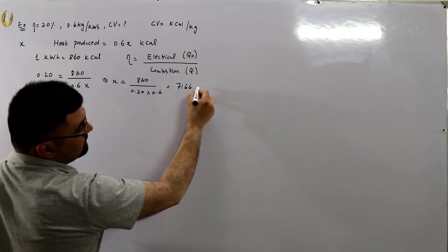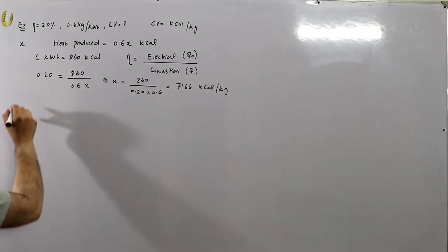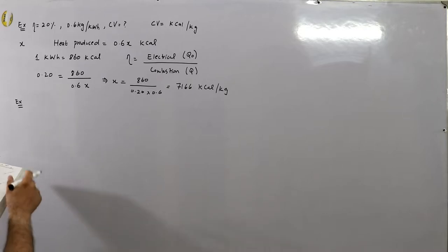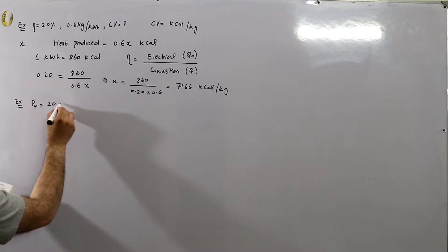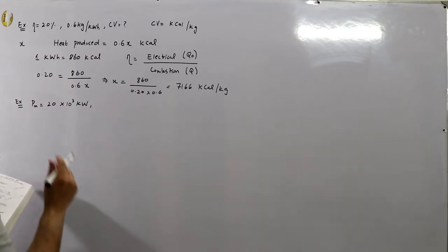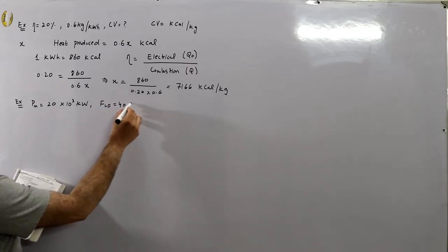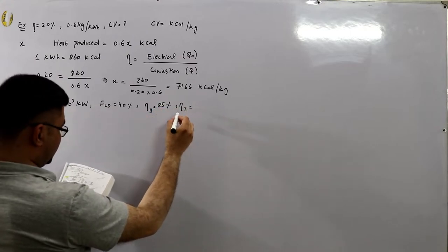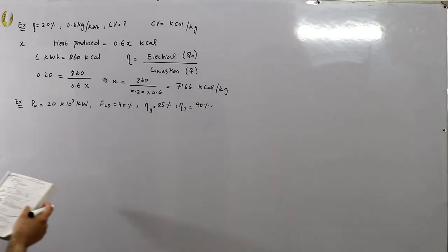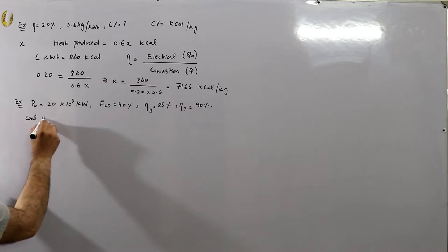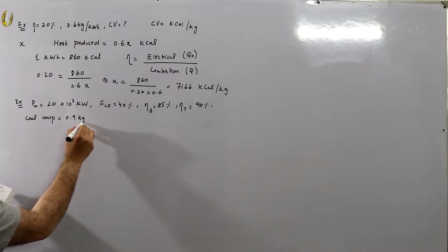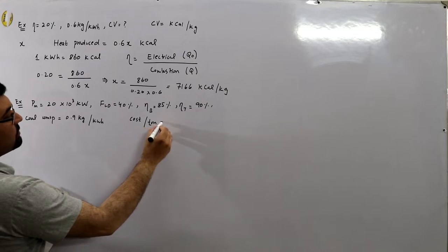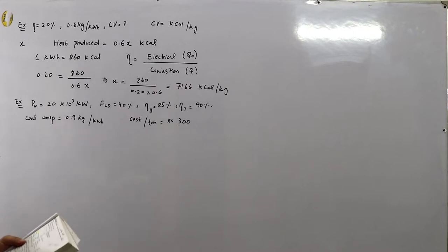Next example: a thermal power station has the following data — maximum demand is 20,000 kilowatts (20 MW), load factor is 40%, boiler efficiency 85%, turbine efficiency 90%, coal consumption is 0.9 kilograms per unit produced, and the cost of coal is rupees 300 per ton.